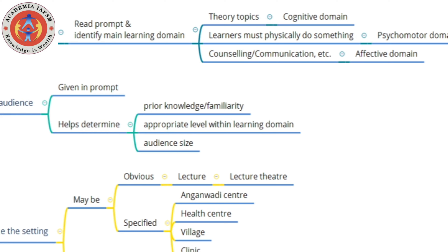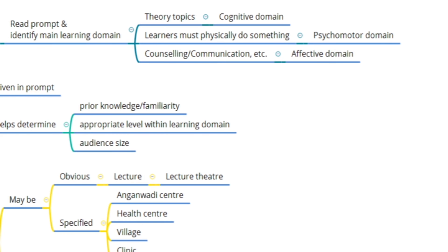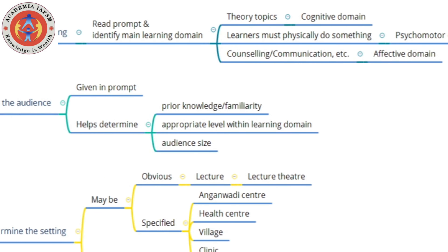Generally, if you're given a theory topic, you're dealing with the cognitive domain. If it is some task where learners must physically do something, it generally comes under the psychomotor domain. Any session involving counseling, communication, etc., is predominantly under the affective domain. Obviously, other domains also need to be invoked — for example, to teach a skill you need to link it with theory.